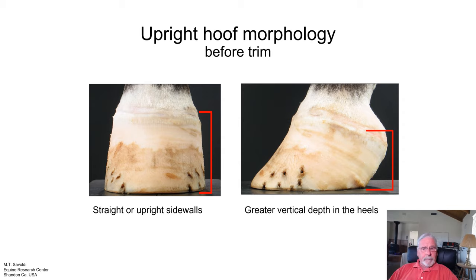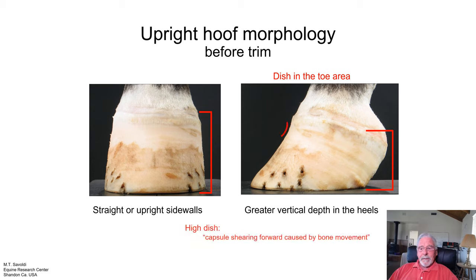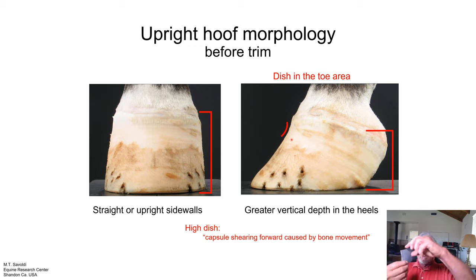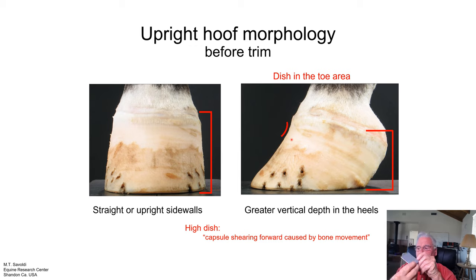There are a couple of simple things we can notice. These feet may develop a high dish in this area. A dish simply means that the wall is bending outward. So the wall — this would normally be the hoof wall — is causing it to bend outward, creating this forward dish.